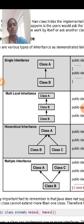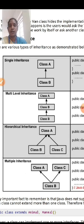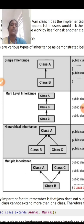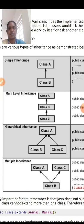The first type is single inheritance. If there are only two classes and one class acquires the property of another class, it is called single inheritance. In the example shown, we have class A and class B. If class B acquires the properties of class A, that is called single inheritance.